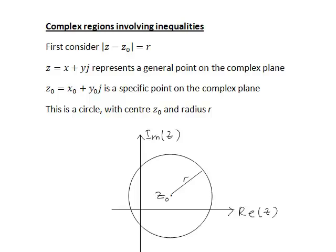In a previous recording, we looked at sketching complex regions of the form |z - z₀| = r.